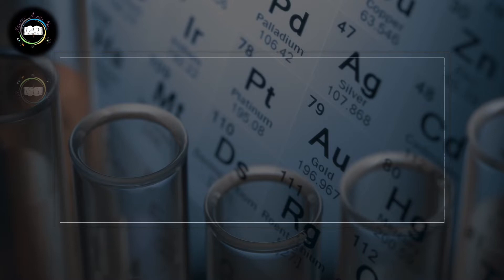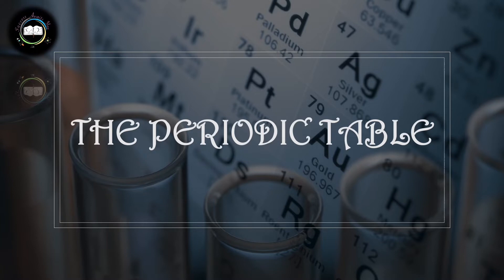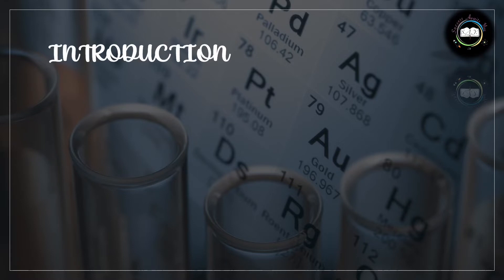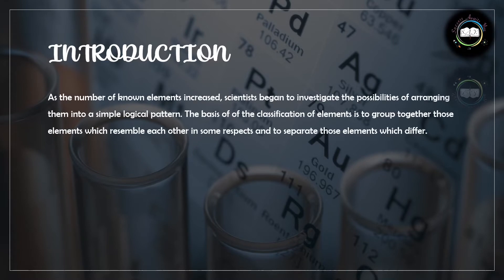In today's video we will discuss the periodic table and how the modern periodic table came into being. The periodic table is a tabular array of the chemical elements organized by atomic number, from the element with the lowest atomic number to the element with the highest atomic number. The aim of the classification of elements is to group together those elements which resemble each other and to separate those which differ. The best classification will clearly be that which brings together elements that resemble one another in the greatest number of ways.